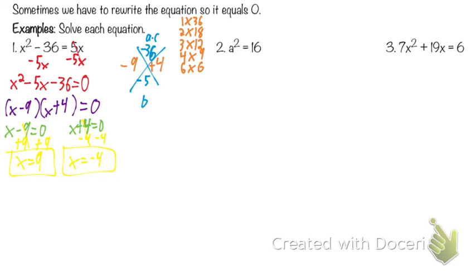So once again, the additional step we had today was to first get the equation equal to zero for the zero product property, and then we had to turn it into multiplication still.